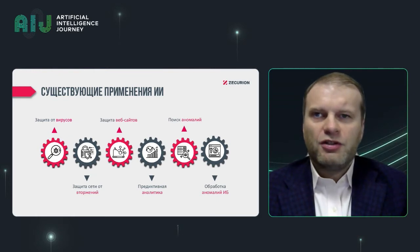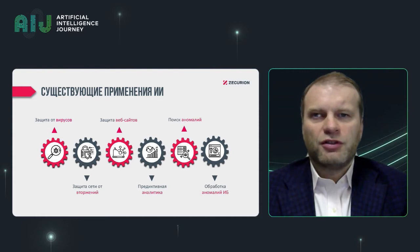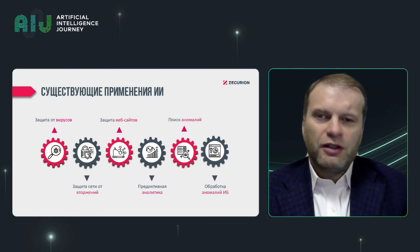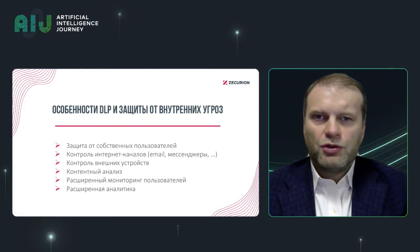AI in cybersecurity — we are not pioneers, of course, in this field. This story has been used on the market for quite a while, but most of the time AI is used to protect the company against external threats. There are many attempts to use AI to fight against viruses, especially unknown ones not in the database. Network protection, anomaly detection, traffic anomaly detection, and similar use cases are very popular for AI usage. But speaking about DLP systems, there are peculiarities.